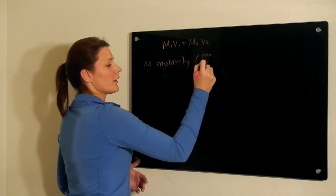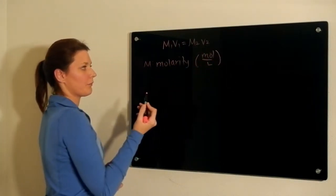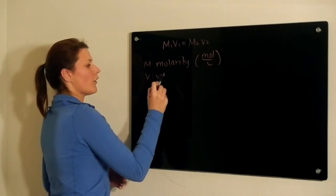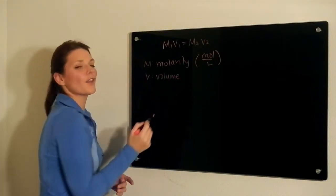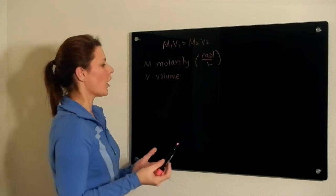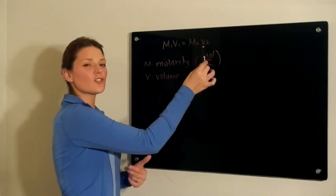Molarity is a breakdown of moles per liter. V stands for volume. The units you use for volume are not particular, you just have to make sure that you're consistent.